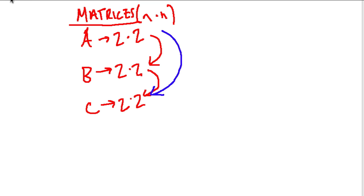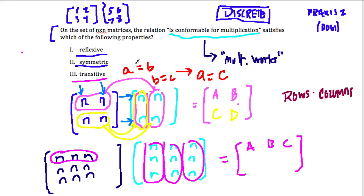So in this problem, the conformable for multiplication property actually satisfies all of these properties. It's reflexive, it's symmetric, and it's transitive. Okay, hope that helped.